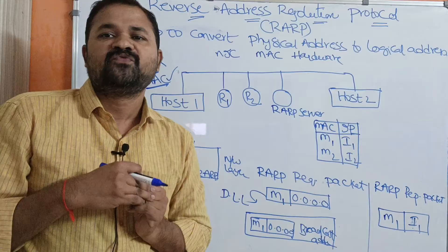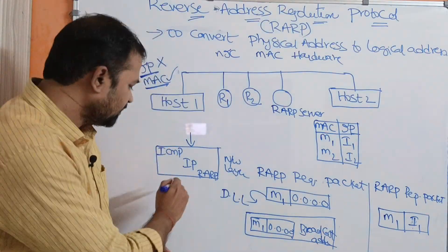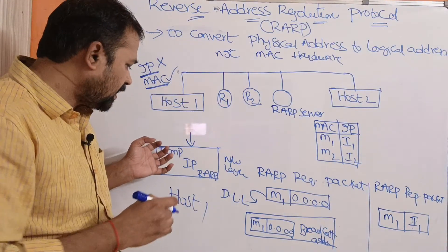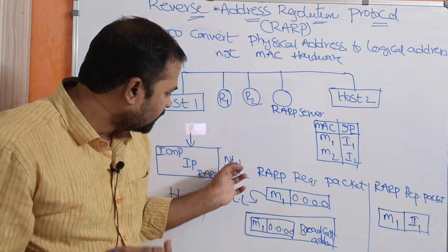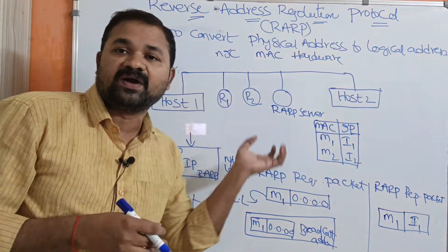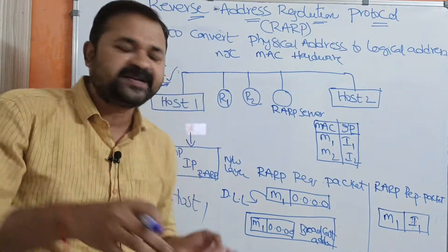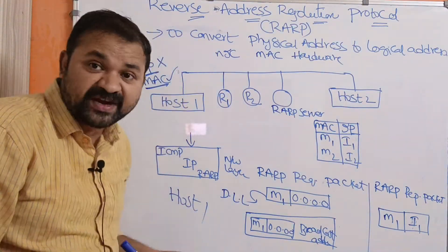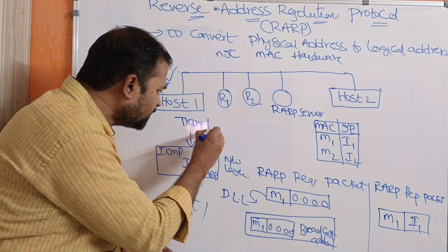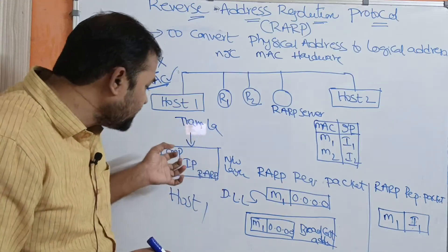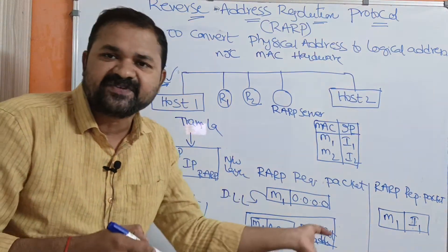Now let us see how it will happen. We know that any message will be transmitted from upper layer to lower layer. In TCP/IP, we can call the network layer as the internet layer. On top of the network layer we have transport layer, then session layer, presentation layer, and application layer. The message is transmitted from transport layer to network layer, from network layer to data link layer, and from data link layer to physical layer. Next, via the network, the message will be transmitted to host 2.